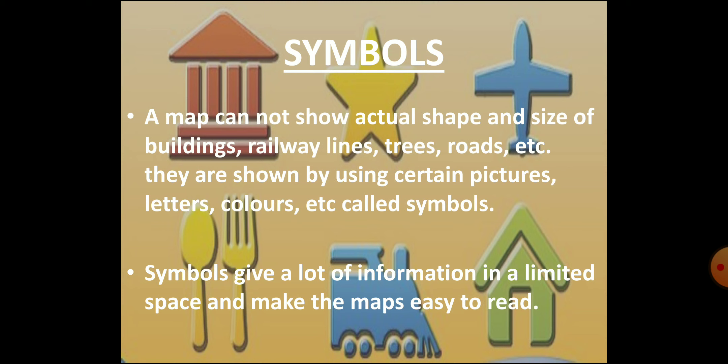Children, the third component of a map is symbols. On a map, various features like buildings, roads, bridges, railway lines, trees, etc. cannot be drawn or shown in their actual shape and size. Therefore, certain letters, shades, colors, pictures, and lines are used to show them on a map. They are called symbols. With the help of these symbols, a lot of information can be provided in a limited space. By using these symbols, maps can be drawn easily and become simple and easy to be read and understood.